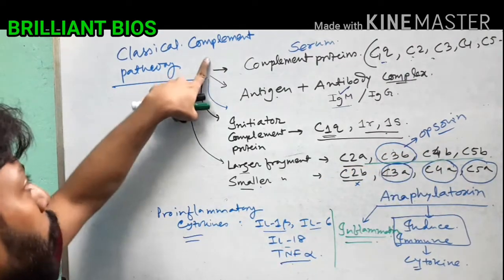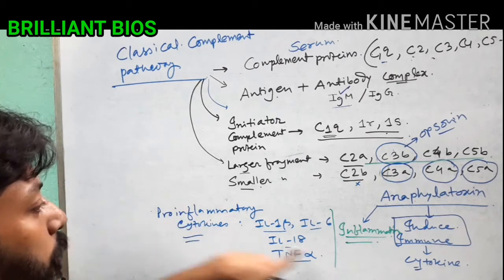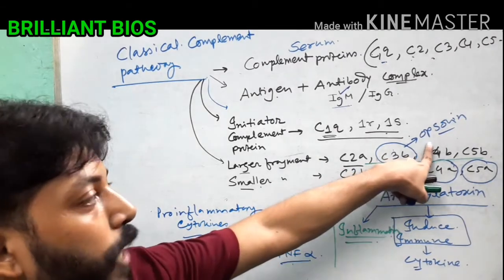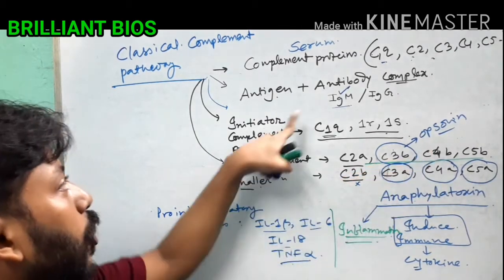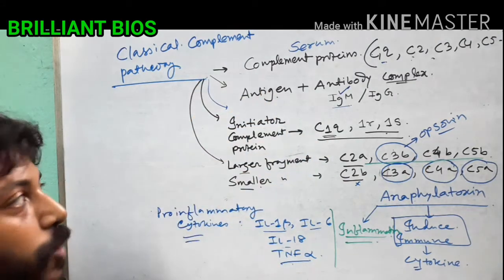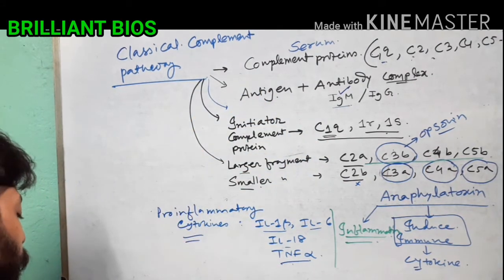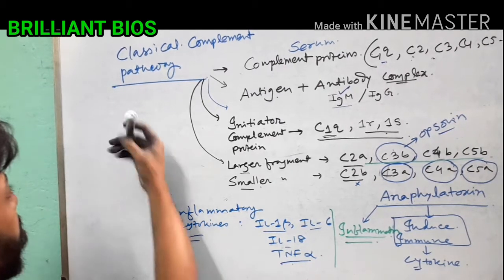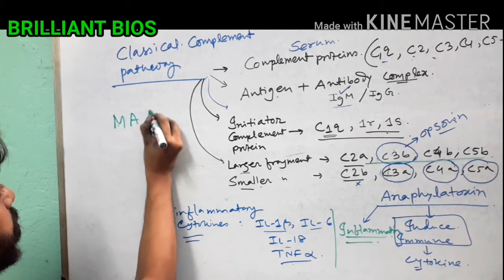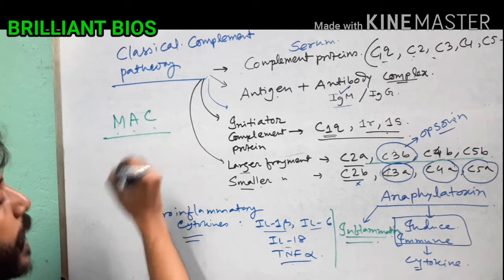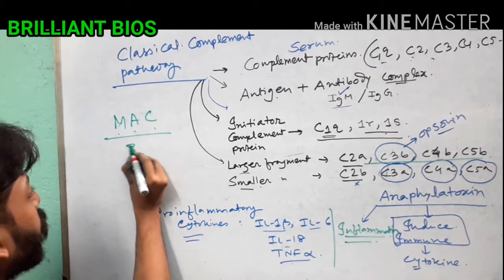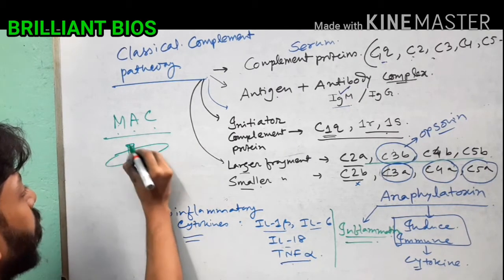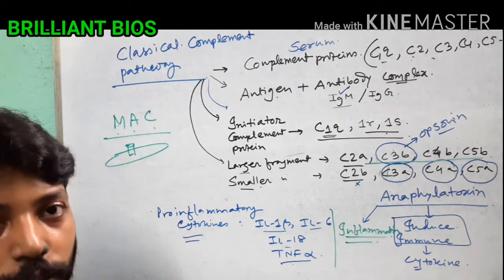By the complement pathway, inflammation can occur and opsonization can occur. One important molecule produced by the complement pathway is called MAC — the membrane attack complex. This complex forms a pore-like structure in the bacterial wall so that the bacteria actually die.